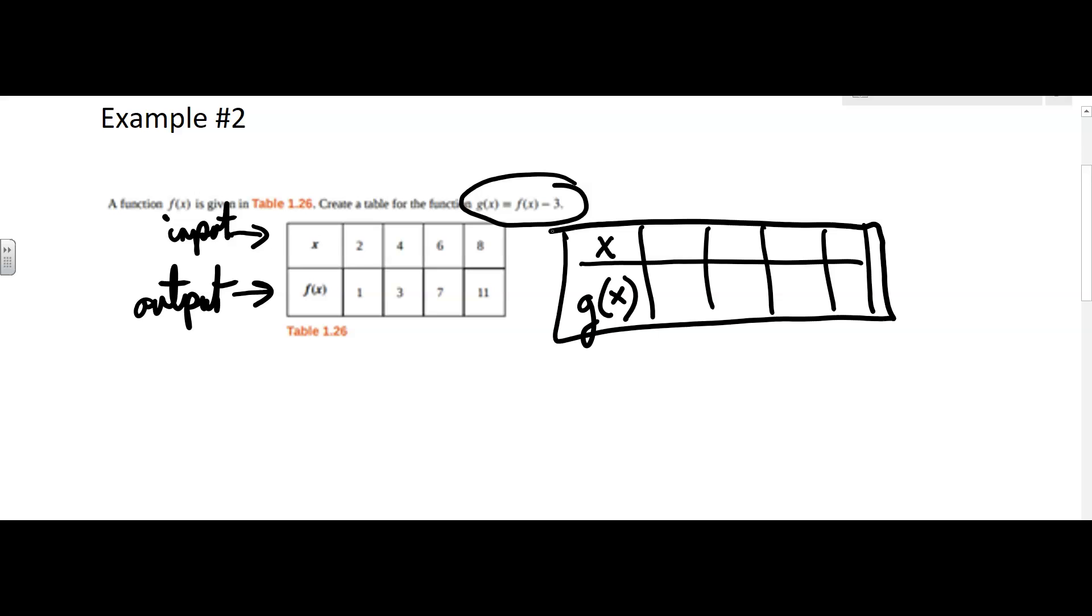So what we're doing for g of x is we're taking the output, f of x, and subtracting 3.